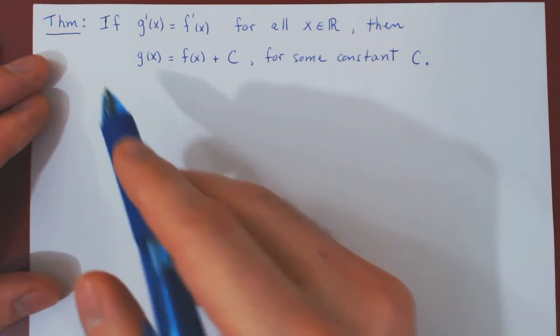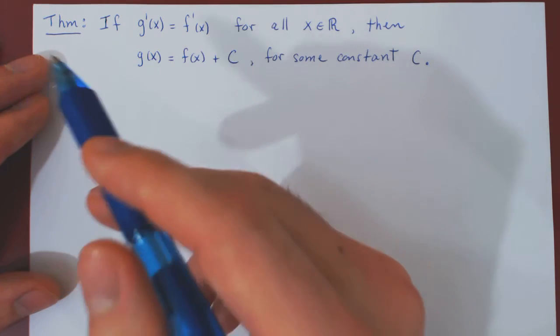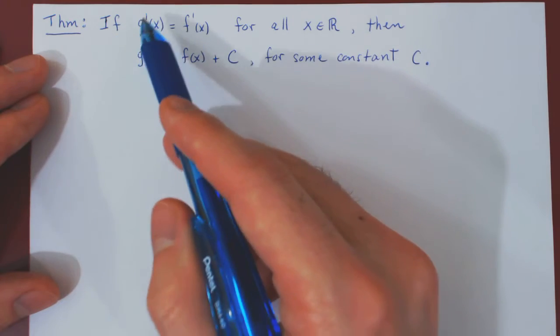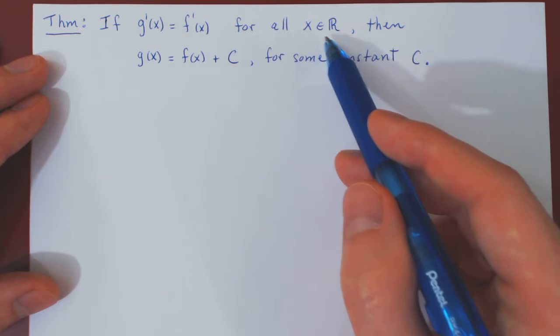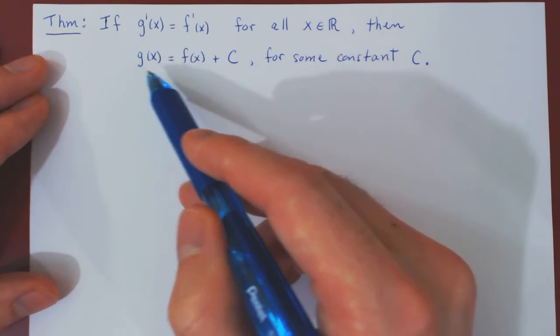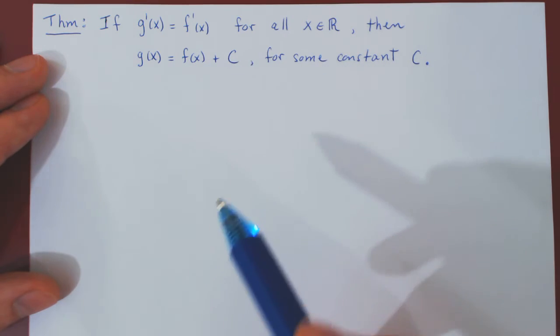Okay, so in this video we will prove the following theorem. The assumption here is that we have two differentiable functions, g of x and f of x, and if the derivative of g equals the derivative of f for all values of x, then the only possible conclusion is that g of x is equal to f of x plus some constant C.